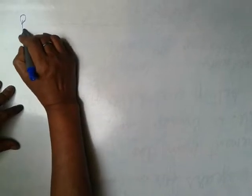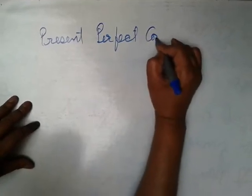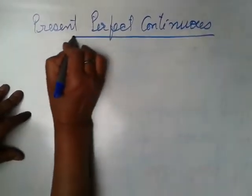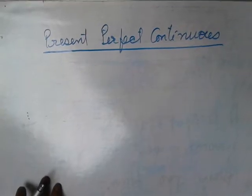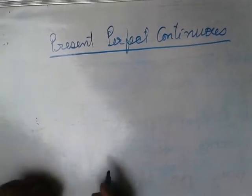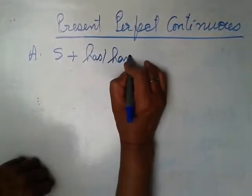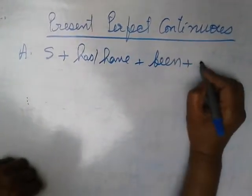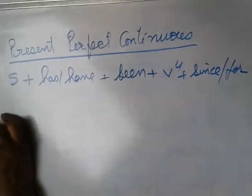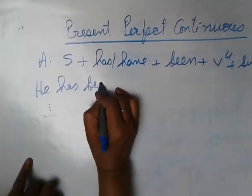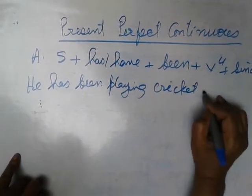Next is present perfect continuous. In present perfect continuous, the action was progressed earlier, it is going on at present, and in future it will also continue. So first structure is subject plus has/have plus been plus V4. Since or for can be used in this one also. He has been playing cricket since morning.